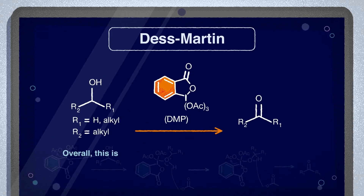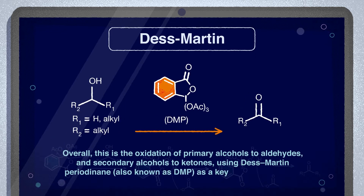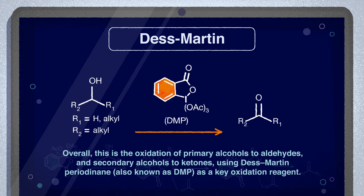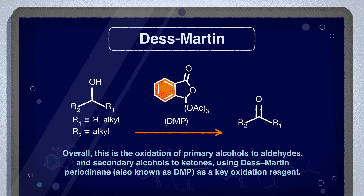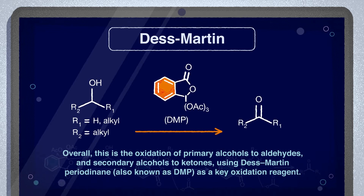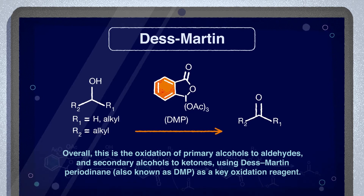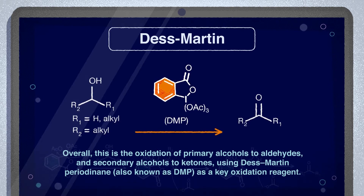Overall, this is the oxidation of primary alcohols to aldehydes and secondary alcohols to ketones, using Des-Martin periodinane, also known as DMP, as a key oxidation reagent.